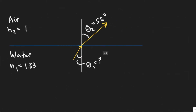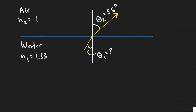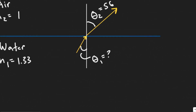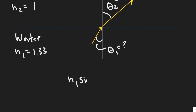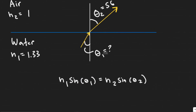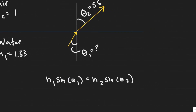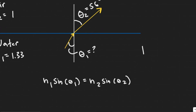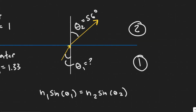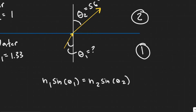To solve this, we're going to use Snell's Law. Snell's Law relates the index of refraction and tells us how the angle changes as a result of going from one medium to another — basically, it relates the bending of light from one medium to another. The formula is: n1 times sine of theta1 equals n2 times sine of theta2. Here, 1 is your initial medium (the water) and 2 is your final medium (the air).